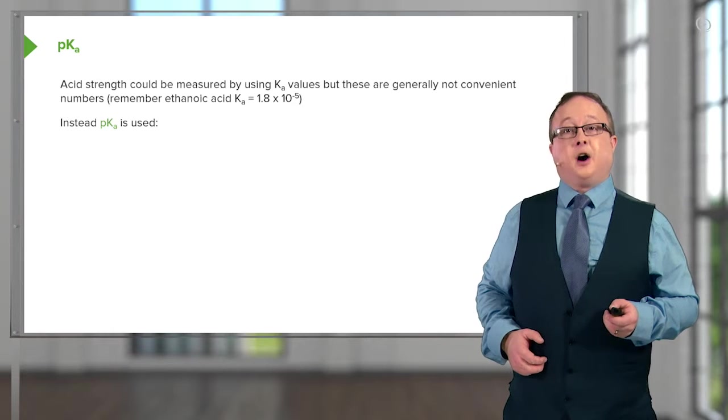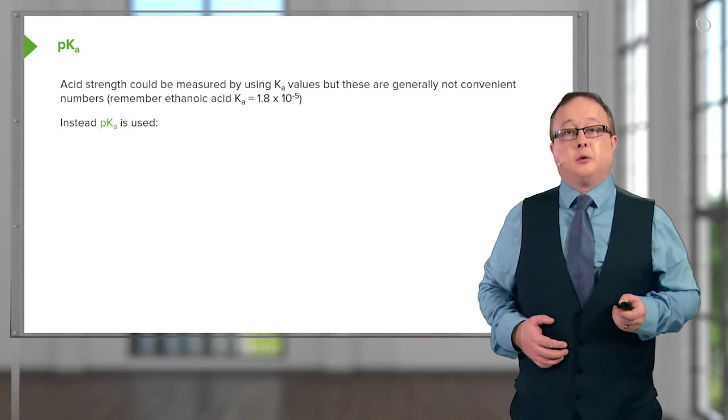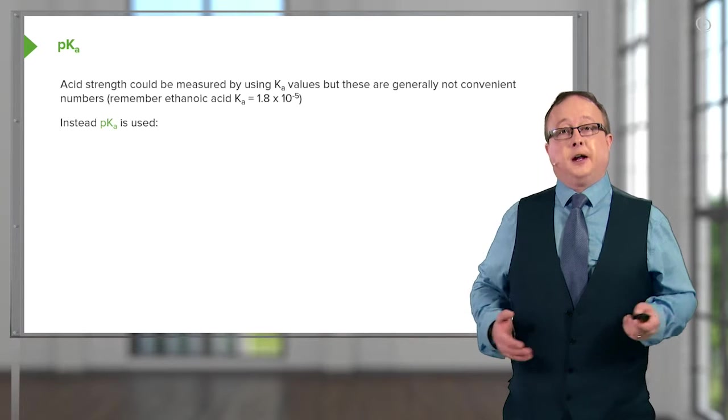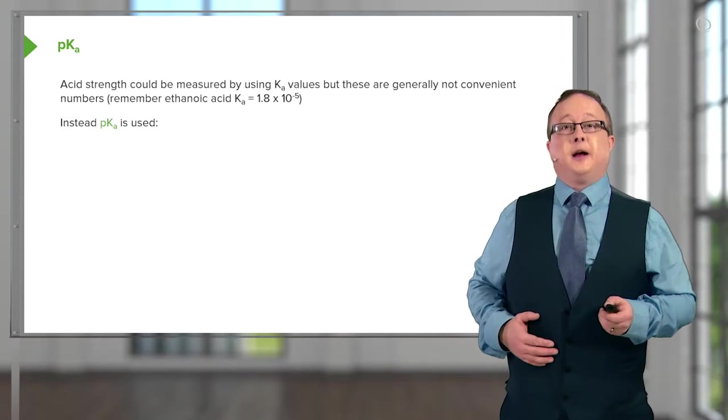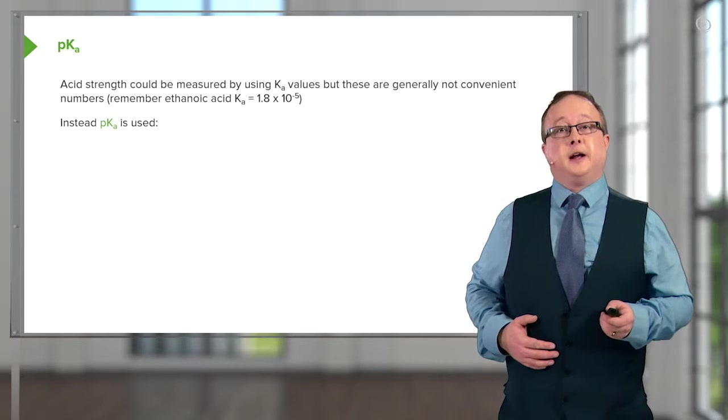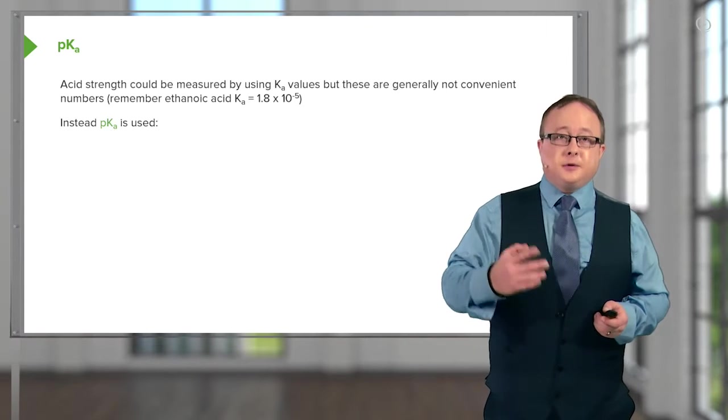1.8 × 10⁻⁵ is a little bit more difficult to work with, especially from a biological perspective. A lot of the calculations may appear confusing and may result in some errors as a consequence.